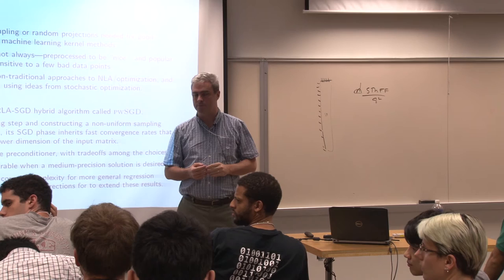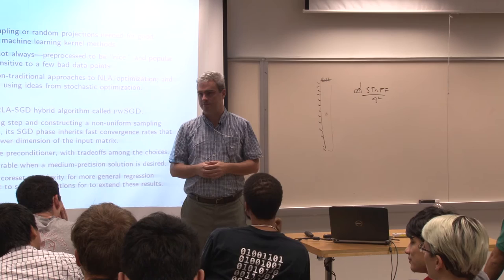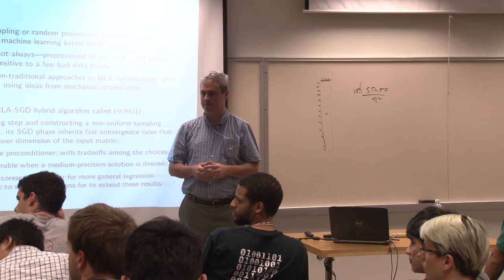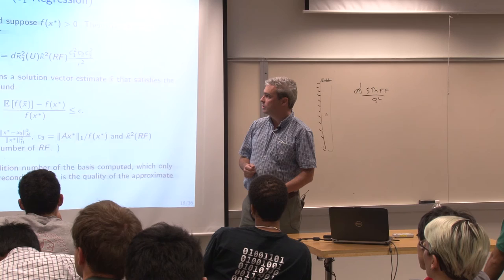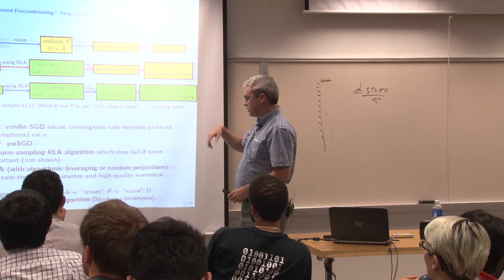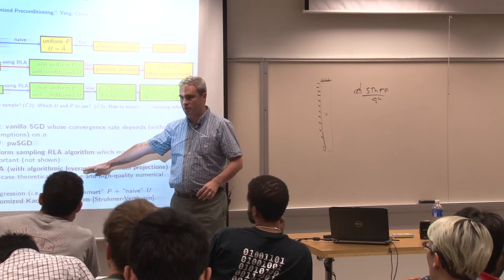The algorithm — PWSGD, preconditioned weighted SGD — is a combination. We preconditioned and we weighted at each stage of the iteration. The knobs can reproduce Kaczmarz, vanilla SGD, vanilla RLA with uniform sampling, or vanilla RLA with non-uniform sampling. If you set them the right way, you get this middle ground that threads the needle. This is a very beautiful result — in a parameter space where both methods have something to contribute, you can get something strictly better than either individual approach.